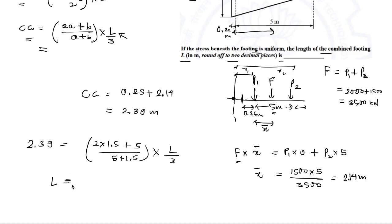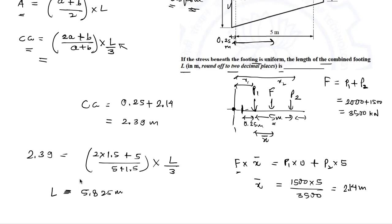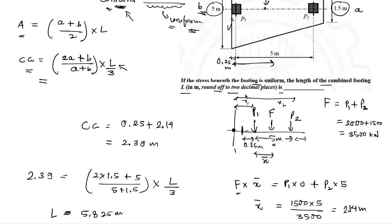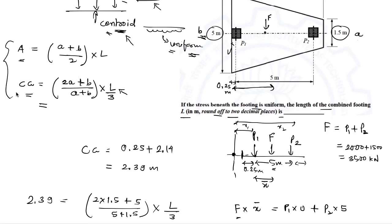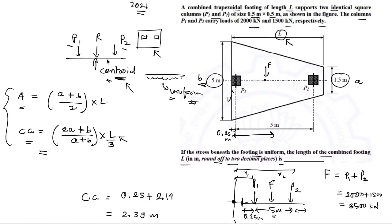Solving this equation gives L = 5.825 meters, which rounds to 5.83 meters — the required answer. To summarize: the key formulae for the trapezoid and the condition that the resultant of P1 and P2 coincides with the centroid of the trapezoidal footing is the underlying concept for this type of problem.